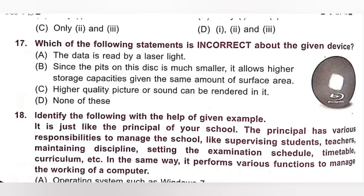C. Higher quality picture or sound can be rendered in it. It is also a correct statement. The given image is of a storage device known as Blu-ray disk. Its storage and picture quality is higher than that of CDs and DVDs. So, none of the above statements is incorrect. Option D, none of these, is the correct answer.